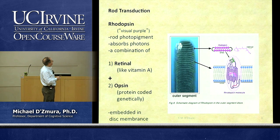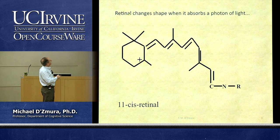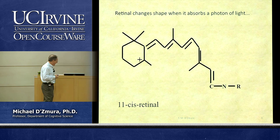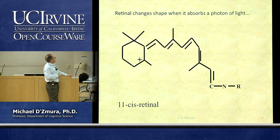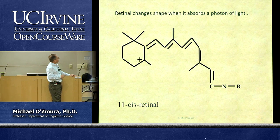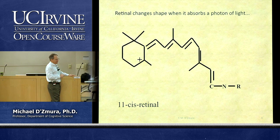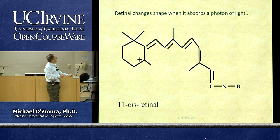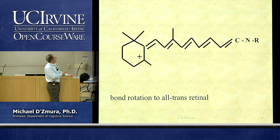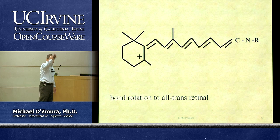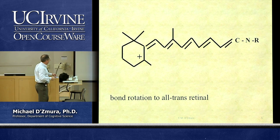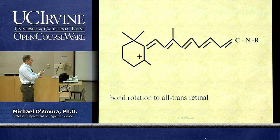How does this help with seeing light? Retinal changes shape when it absorbs a photon of light, and that initiates a chain of events leading to a change in polarization of the photoreceptor. When retinal is hanging out by itself, it's in the cis conformation. When a photon is absorbed, it straightens out and becomes the all-trans configuration — sensed by the surrounding opsin.